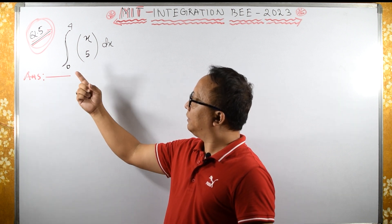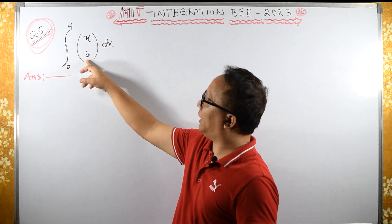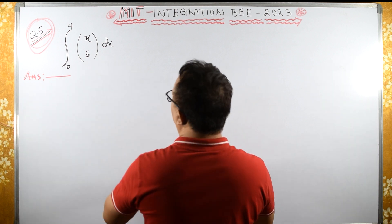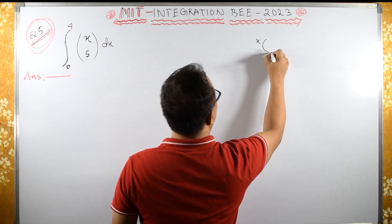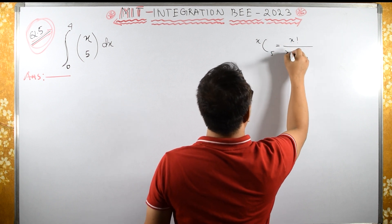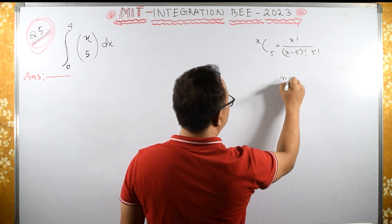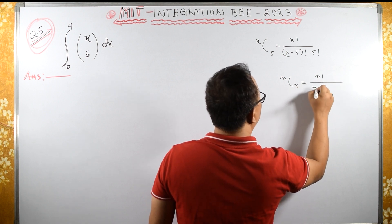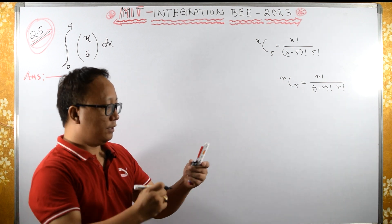The integration is from limit 0 to 4 of X C φ dx. Now, what is this notation? This is normally written as X C φ, which is the same as X factorial upon (X minus φ) factorial times φ factorial — because N C R equals N factorial upon (N minus R) factorial times R factorial. We have this formula.